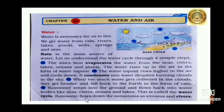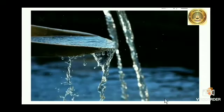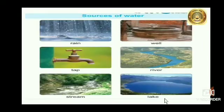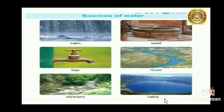Rainwater flows down the mountains as streams and rivers. So students, do you know water is so important for us to live? Where do we get water from? We get water from rain, rivers, lakes, ponds, wells, springs and seas. Rain is the main source of water.